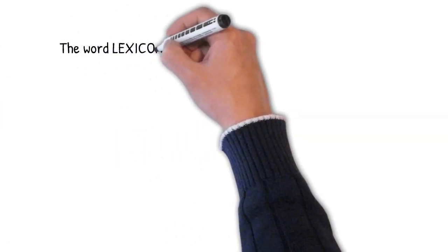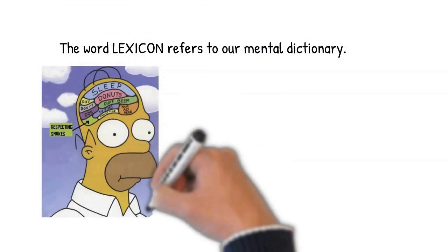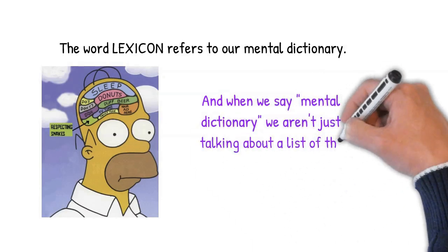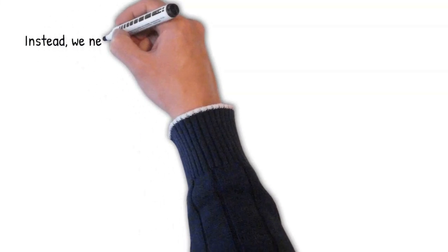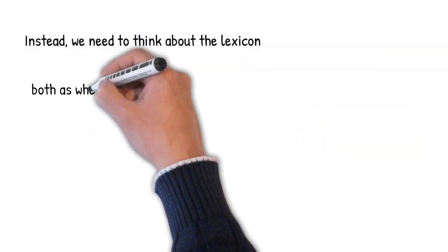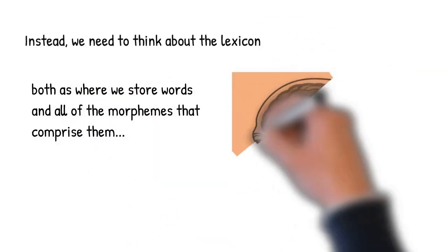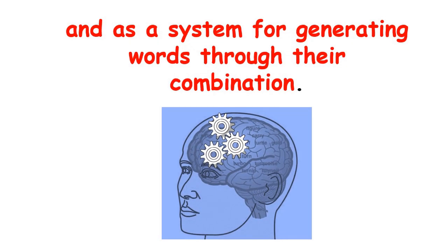The lexicon is the term that linguists use to talk about our mental dictionary. But when we say mental dictionary, we aren't just talking about a list of the words that we know. Instead, we need to think about the lexicon, both as where we store words and all of the morphemes that comprise them, and as the system for generating words through the combination of those morphemes.